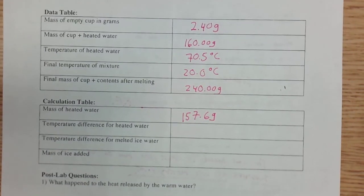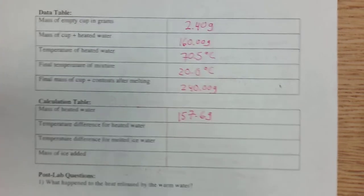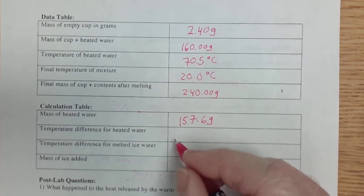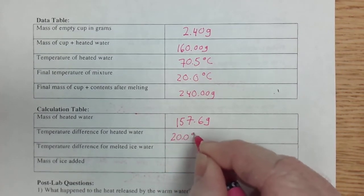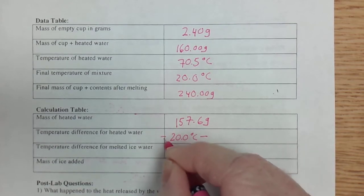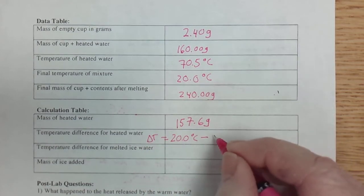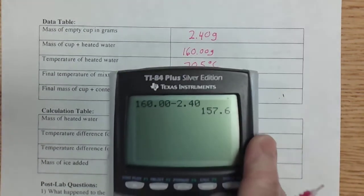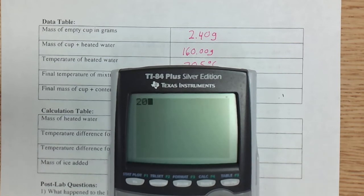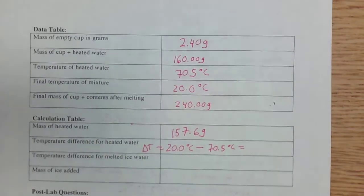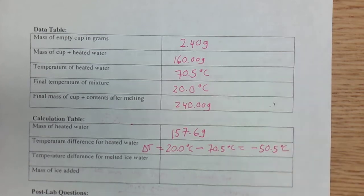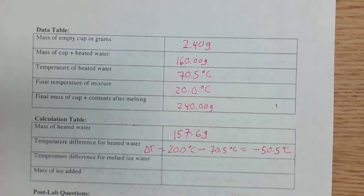Now, how about the temperature difference for the heated water? It ended at 20 degrees Celsius. 20.0 minus where it started, which was at 70.5 degrees Celsius. So let's do that here. 20.0 minus the 70.5. And I get negative 50.5.